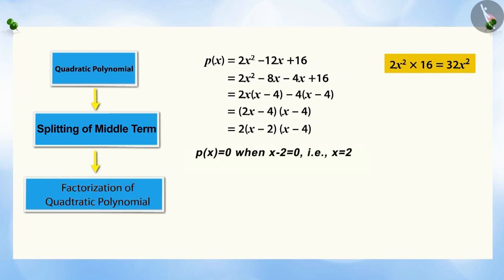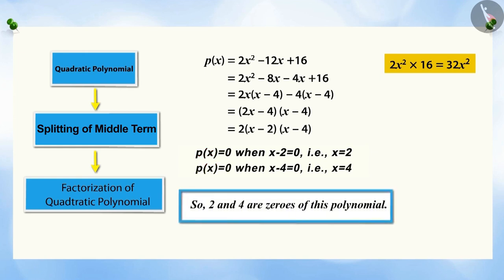Therefore, for X minus 2 equal to 0, that is X equal to 2, or X minus 4 equal to 0, that is X equal to 4, the value of the polynomial will be 0. So 2 and 4 will be the zeros of this polynomial P(X).